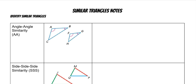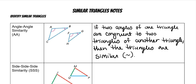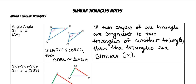Angle-angle similarity says: if two angles of one triangle are congruent to two angles of another triangle, then the triangles are similar. So if angle A is congruent to angle F and angle B is congruent to angle G, then triangle ABC is similar to triangle FGH. You only need two angles because if two are congruent, the third must also be congruent, since all angles add up to 180 degrees.